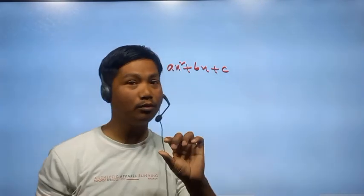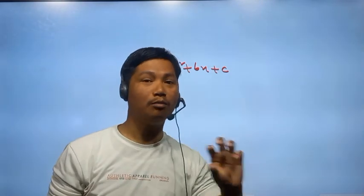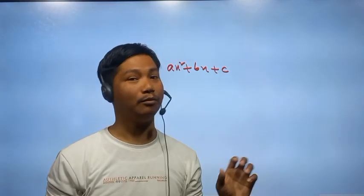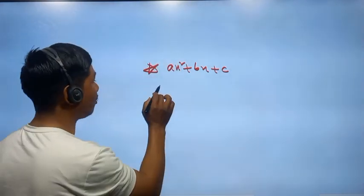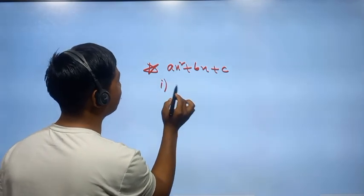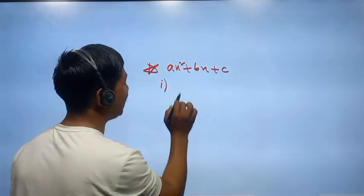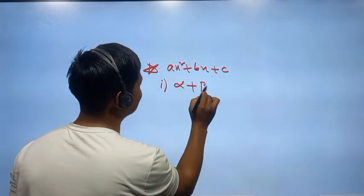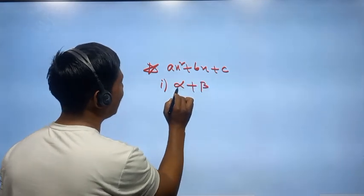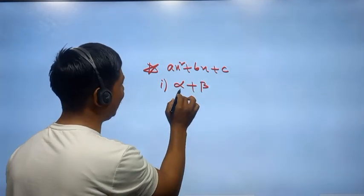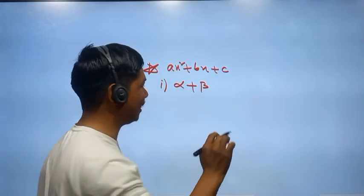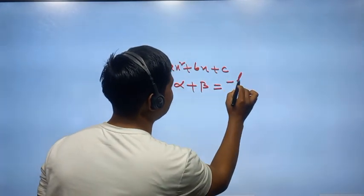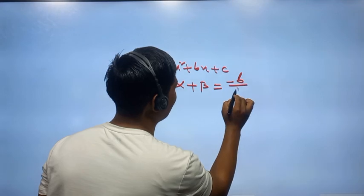I would like to say alpha plus beta. Okay, so I would like to add alpha plus beta, and a plus b will be 2. This formula: a minus b by a will be written by the formula.